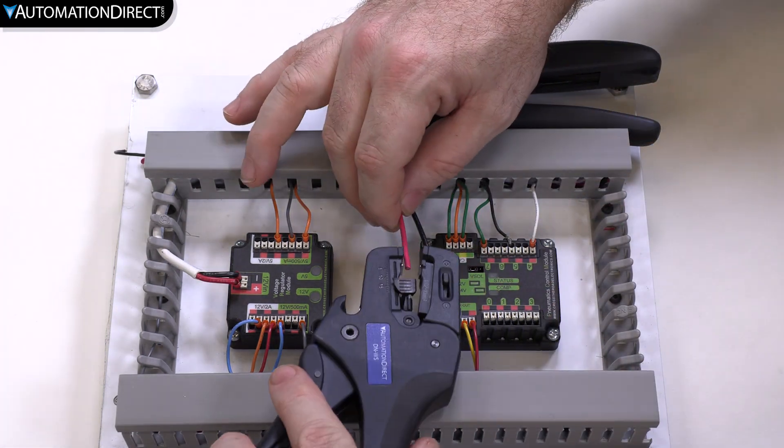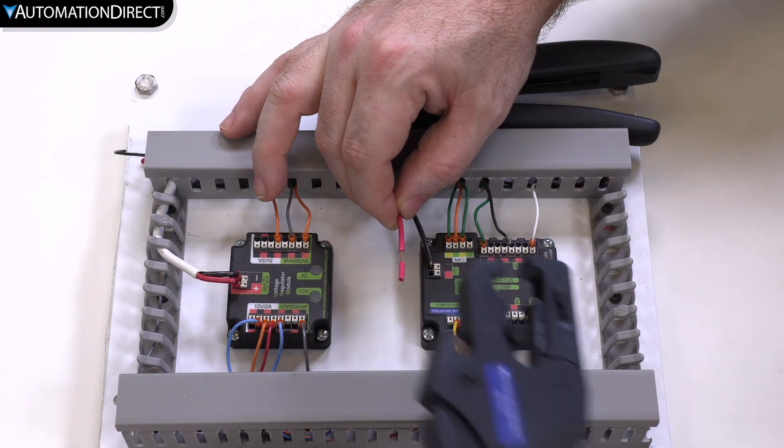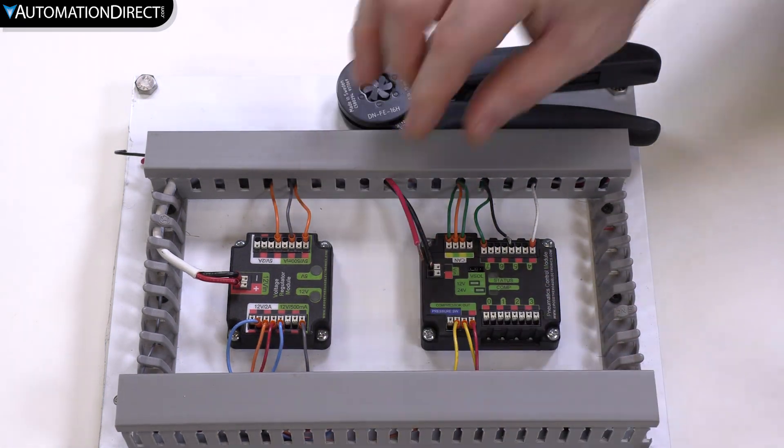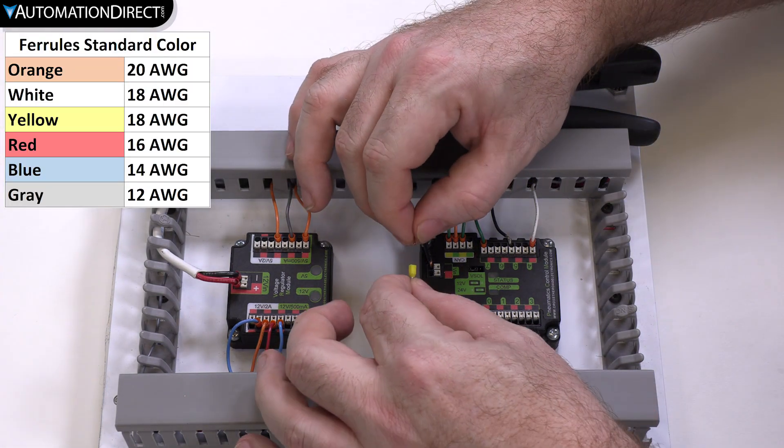First you need to strip the wire. Insert the wire into the correct gauge ferrule.